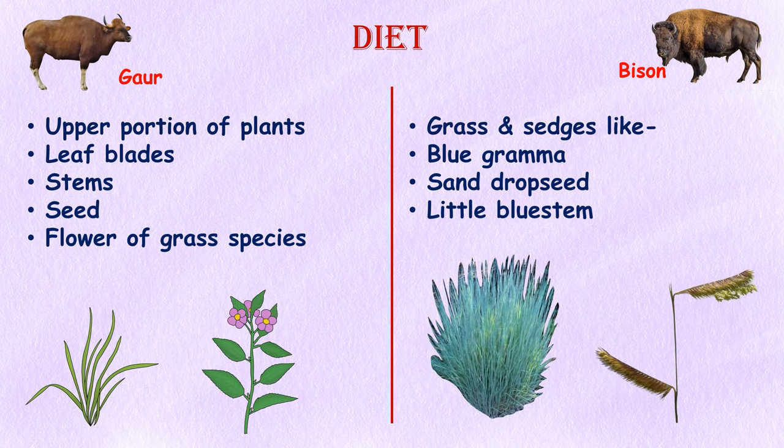Diet: The gaur grazes and browses mostly the upper portions of plants such as leaf blades, stems, seeds, and flowers of grass species. Bison are considered generalist foragers, meaning they eat a wide array of herbaceous grasses and sedges commonly found in mixed grass prairies, including species such as blue grama, sand dropseed, and little bluestem.